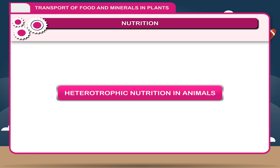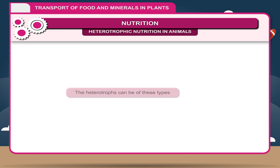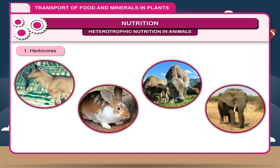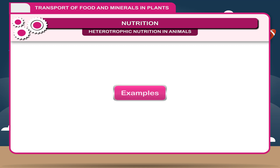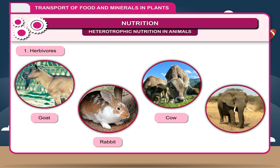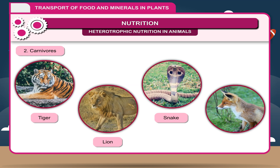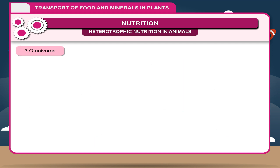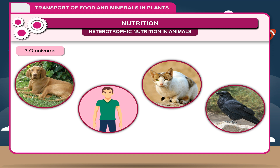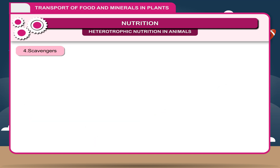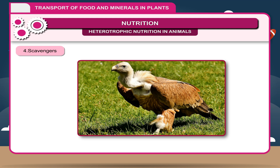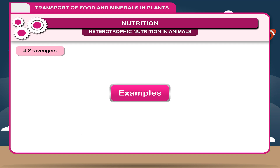Heterotrophic nutrition in animals: The heterotrophs can be of these types. 1. Herbivores: Animals which depend upon green plants (producers) for their food; also called primary consumers. Examples: goat, rabbit, cow, elephant. 2. Carnivores: Flesh-eating animals. Examples: tiger, lion, snake, fox. 3. Omnivores: Animals which eat both flesh and plants. Examples: dog, man, cat, crow. 4. Scavengers: Animals that consume dead animals. Example: vultures.